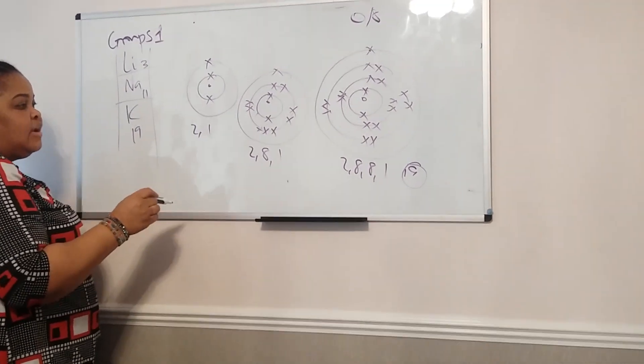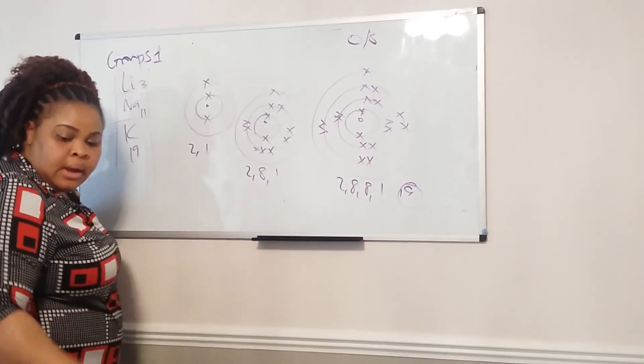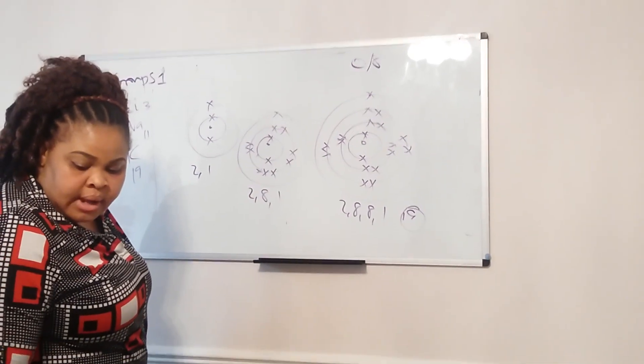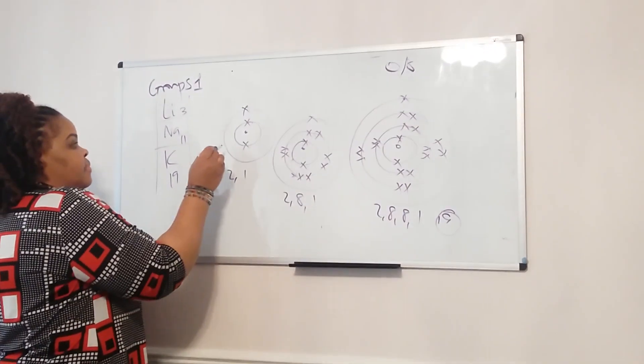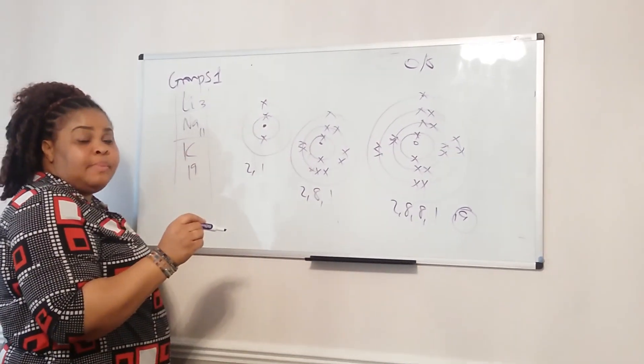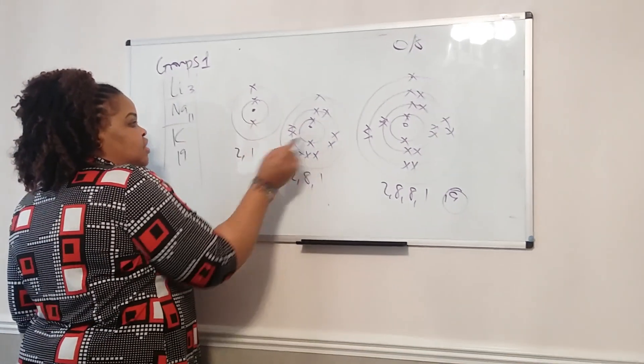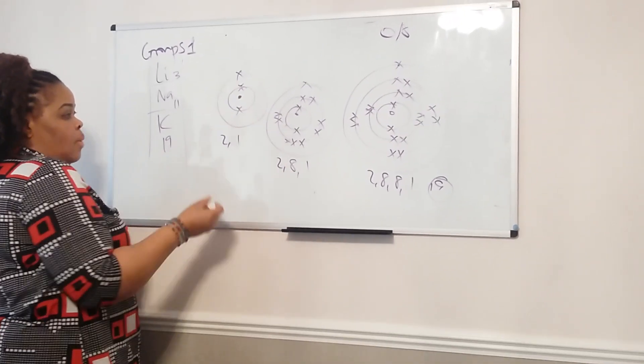By the way, what I've just drawn is the electronic structure or electronic configuration, if you want to be posh - excuse my alarm. Electronic configuration, and the rule is that on the first shell, if this is the nucleus, on the first shell you can put a maximum of 2, and every other shell can take up to 8. This is only 3, so we just put what we've got.